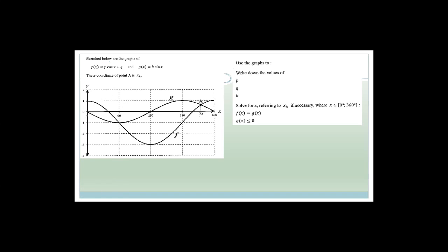Now: sketch below shows graphs f(x) = p·cos(x) + q and g(x) = k·sin(x). The k affects the amplitude — it messes with plus or minus, up or down, big or small. The q shifts it up or down. They've marked off which is graph g and which is graph f, and it says use the graphs to write down the values of p, q, and k.